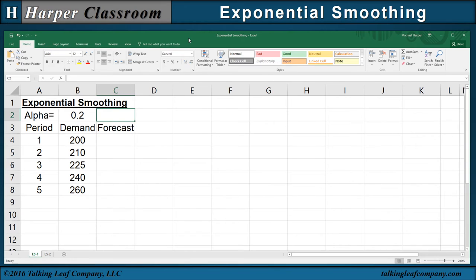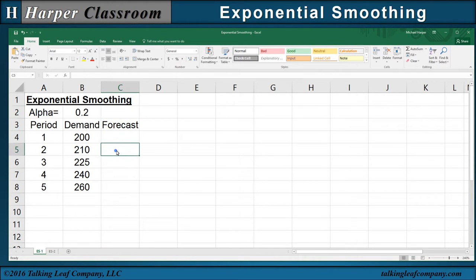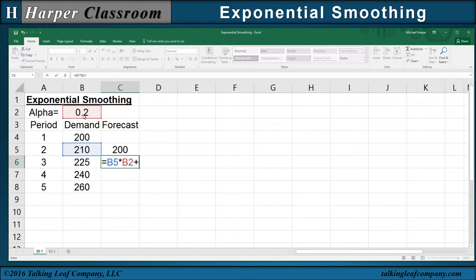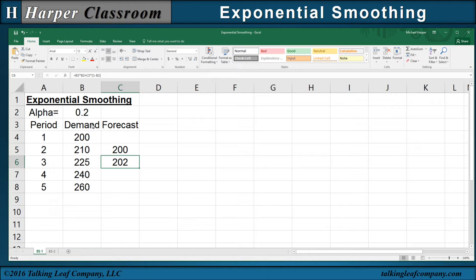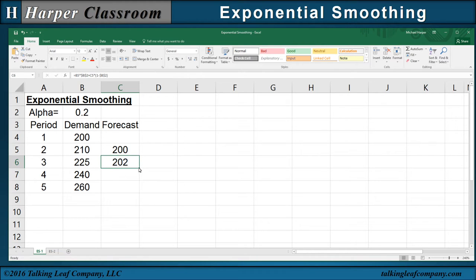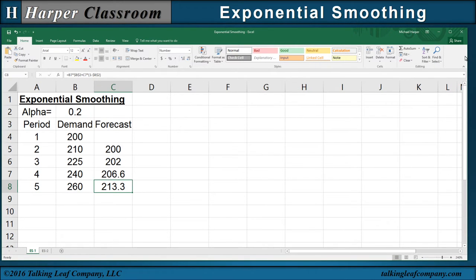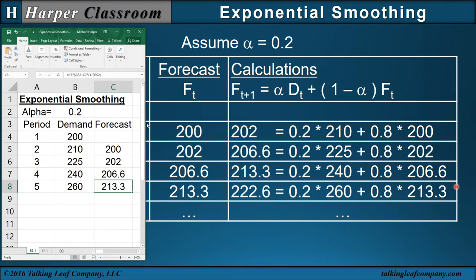Let me bring in Excel. I've already typed in my data. Let the forecast in time period two equal the demand in time period one. Then my forecast is my demand times my alpha plus my forecast times my one minus alpha. Since I want my alpha to be consistent all the way through, I go back and take my alpha, hit F4 to freeze it, then F4 to freeze my alpha reference B2 again. Now I can just copy that down, and there's my forecast.